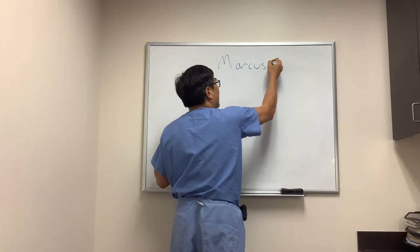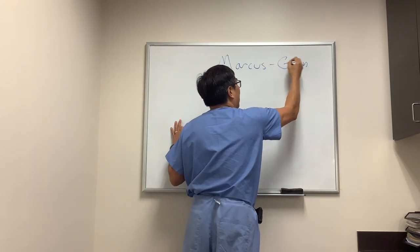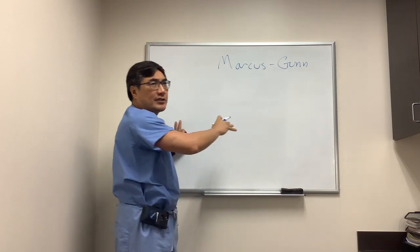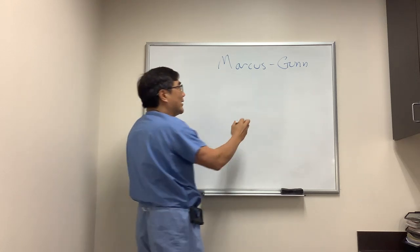We're going to talk about the Marcus Gunn jaw-winking phenomenon. It's the same guy that does the Marcus Gunn pupil, which is a relative afferent pupillary defect.